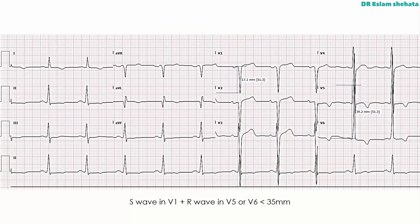I've thrown in this example here — the S-wave depth is 17.1mm in this lead, and when the ECG is on the computer it's great because you can measure these things quite precisely. Over in V6 we've measured it and it's 34.2mm. So this obviously adds to more than 35mm, and so this is left ventricular hypertrophy.